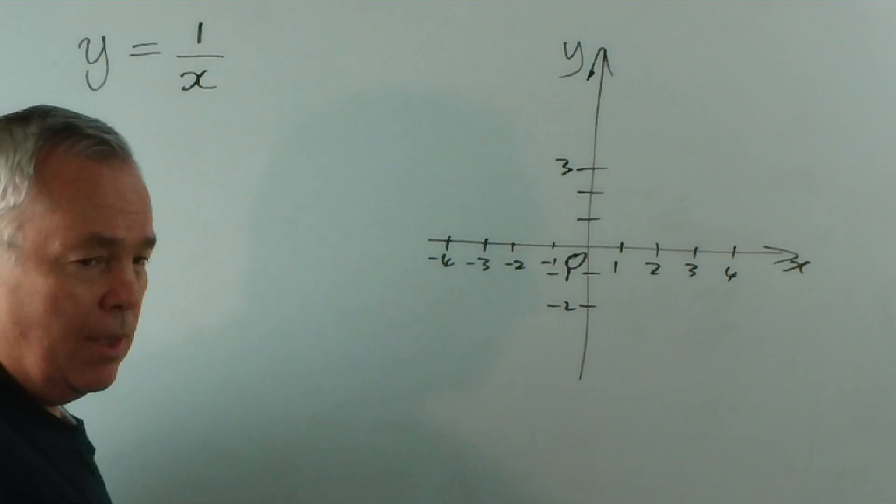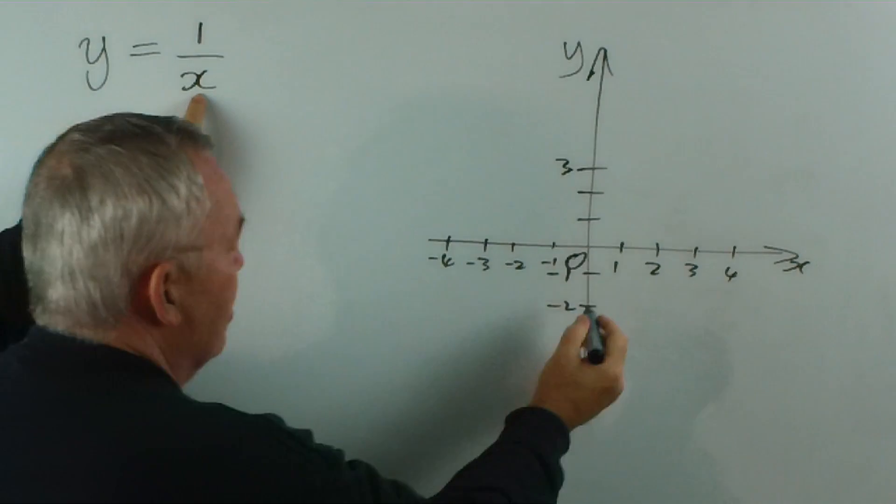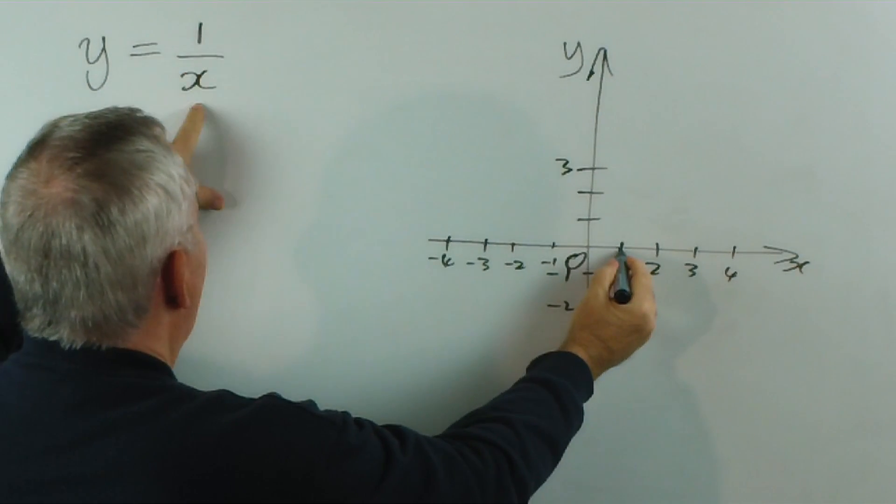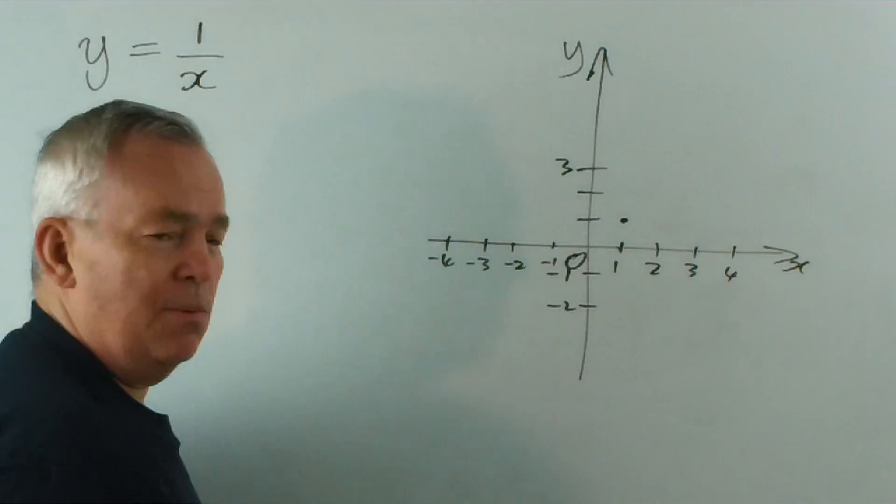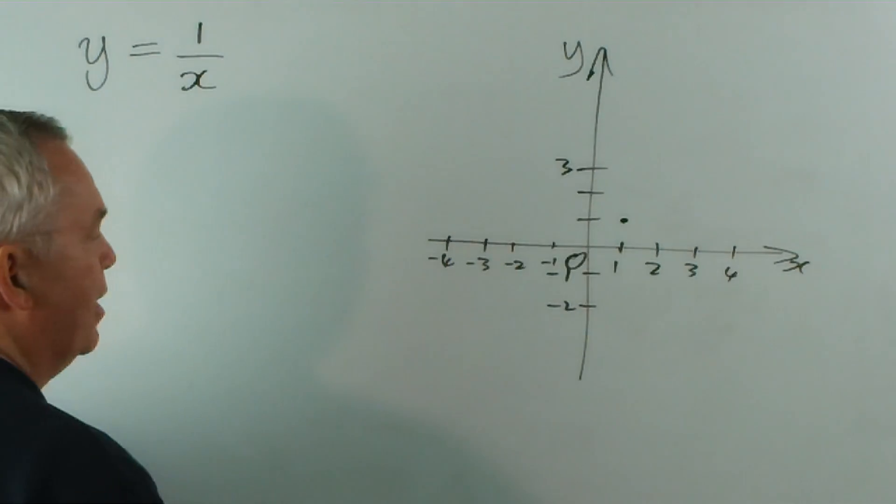When we're substituting, and this is probably the best way to start learning about hyperbola and asymptotes, if I substitute x equals 1, I get 1 over 1, which is worth 1. Well, that's nice and basic. We'll learn more about this particular point and this location later.